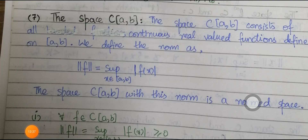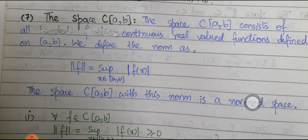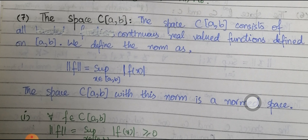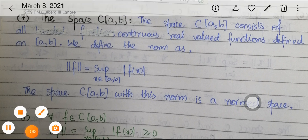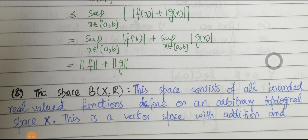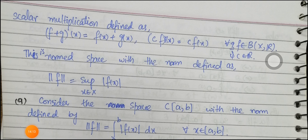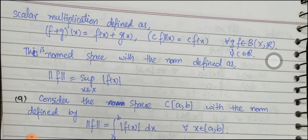Example 7: The space C[a,b] consists of all continuous real-valued functions defined on the closed interval [a,b], with the norm ‖f‖ = sup_{x ∈ [a,b]} |f(x)|. Example 8: The space B(X,ℝ) consists of all bounded real-valued functions defined on an arbitrary topological space X. It is a vector space with (f+g)(x) = f(x)+g(x) and (cf)(x) = c·f(x), and it is a normed space under the norm ‖f‖ = sup_{x∈X} |f(x)|.